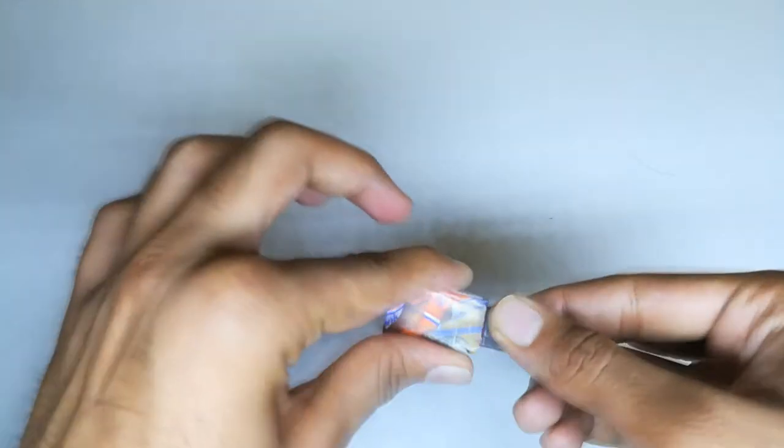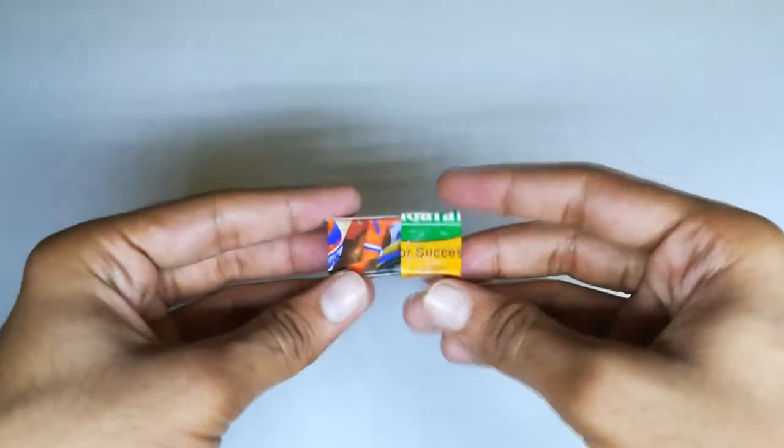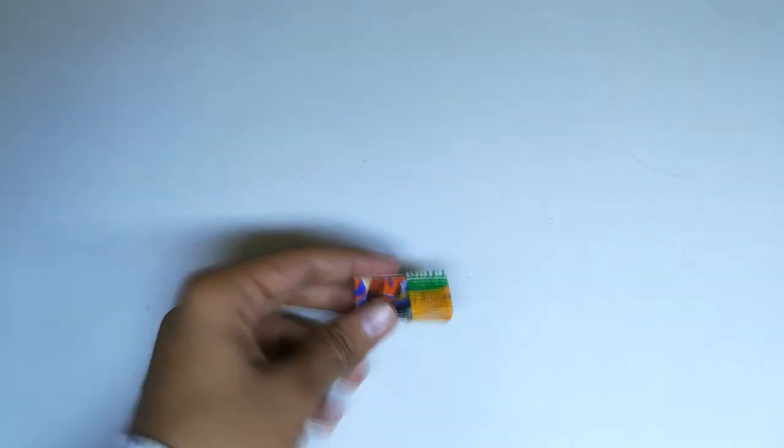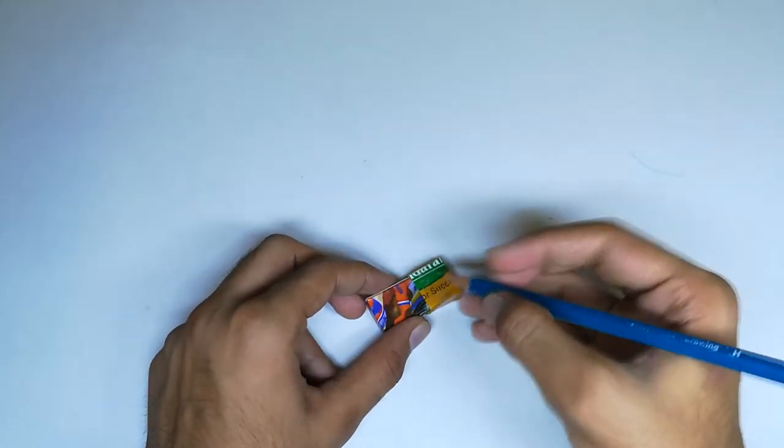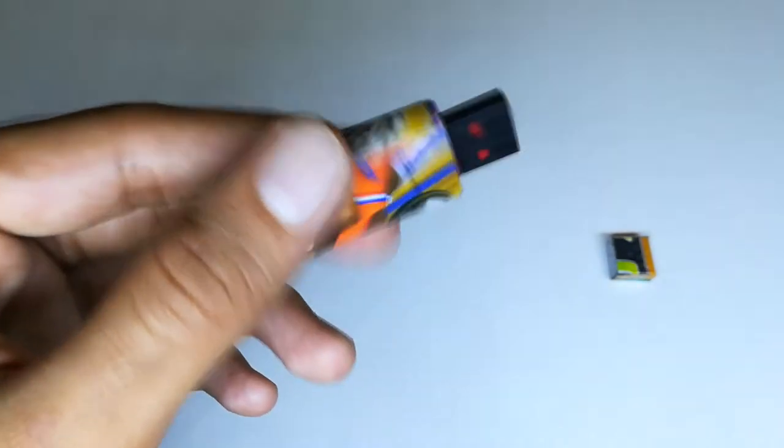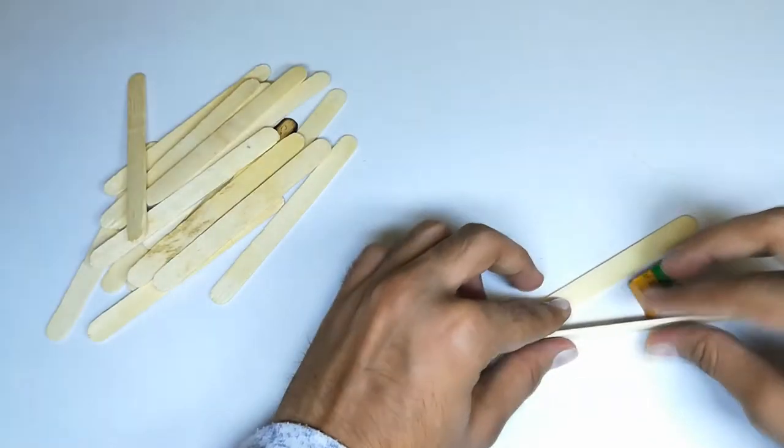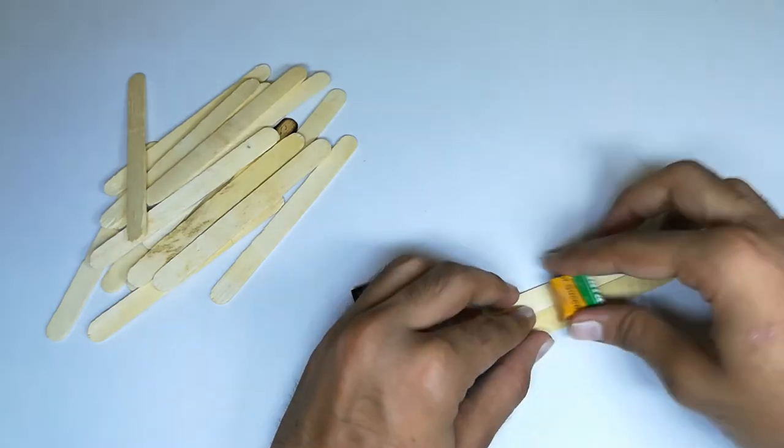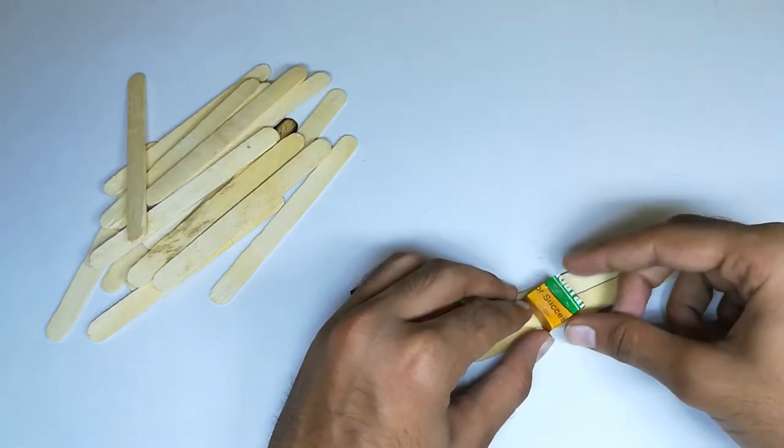The box has dried and is ready. Now we have to stick popsicle sticks over it, but before that make a marking on the lower part wherever the upper part ends. So we have to stick the ice cream sticks only up to this line. Now cut the sticks according to the size of the sides of the boxes and stick accordingly.